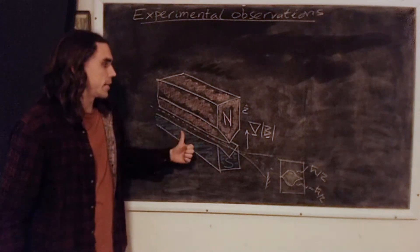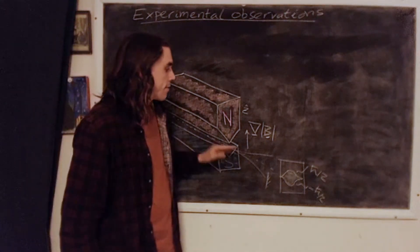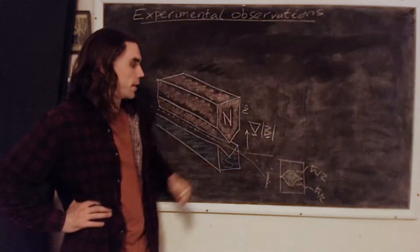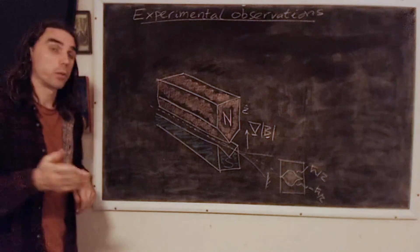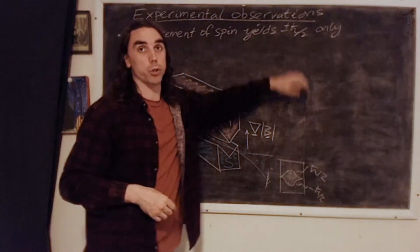So Stern-Gerlach apparatus has a direction in which it's going to split the beam. And by blocking one of the paths, we can guarantee that our electrons are spin-polarized. In this case, it would give us spin up. We could also choose the spin down direction. So we make the following observation. Measurement of spin yields the values plus or minus h-bar over 2 only.